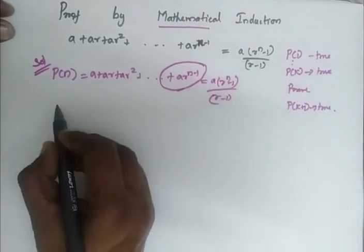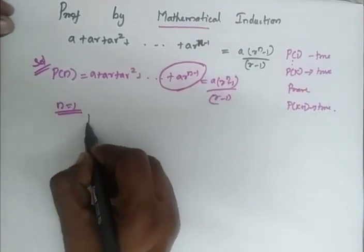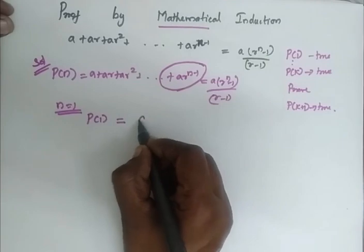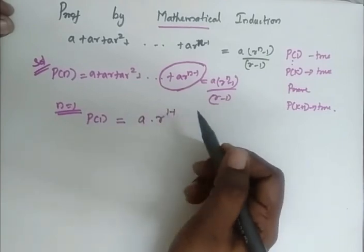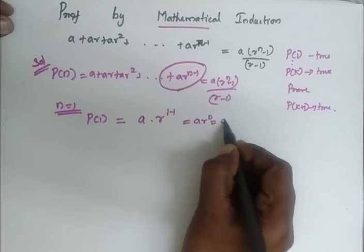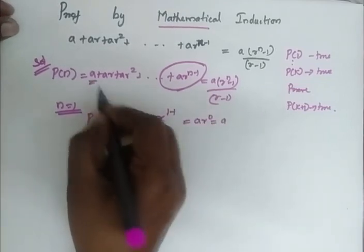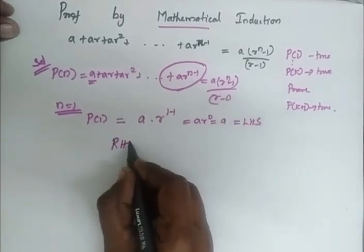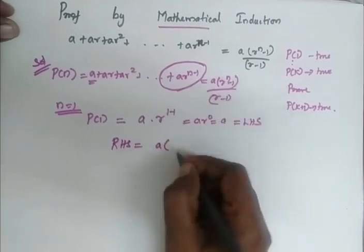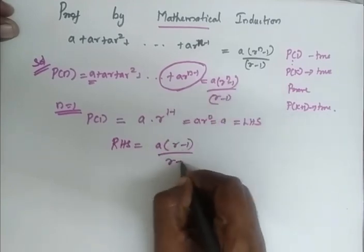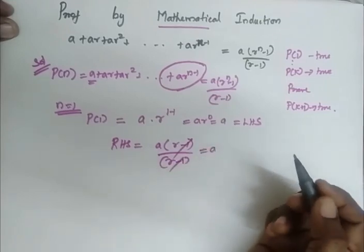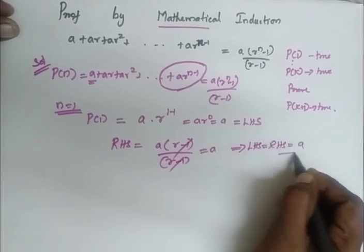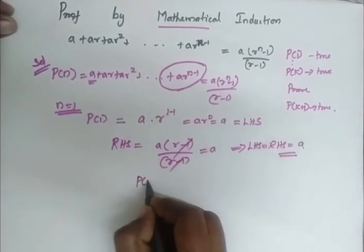I consider my n equal to 1. So my P of 1: wherever I have n, I substitute 1. So a into r power 1 minus 1, which is equal to a into r power 0, which is a. This is the first term, so this equals my LHS. My RHS is equal to a into r power 1 minus 1 divided by r minus 1, which equals a. So my LHS equals RHS, which equals a. Therefore my P of 1 is true.